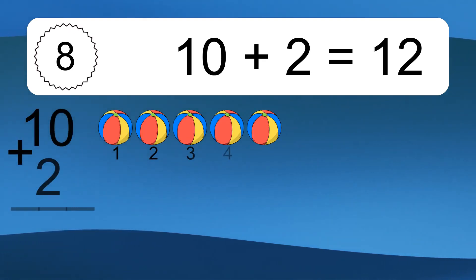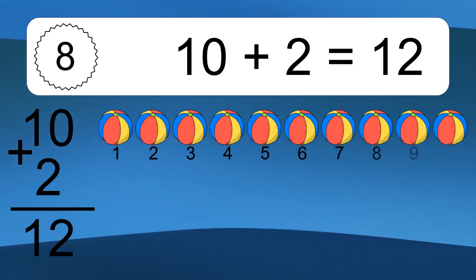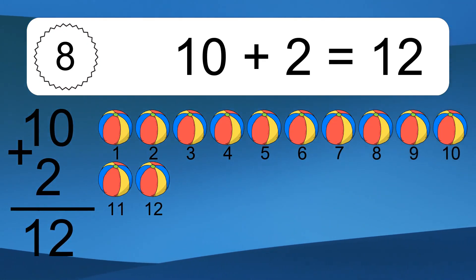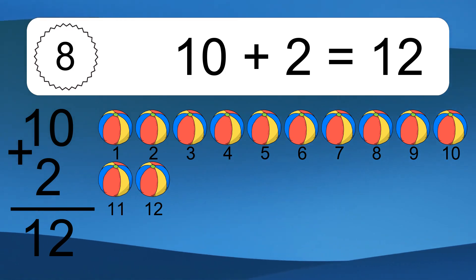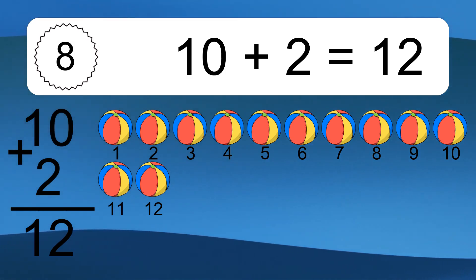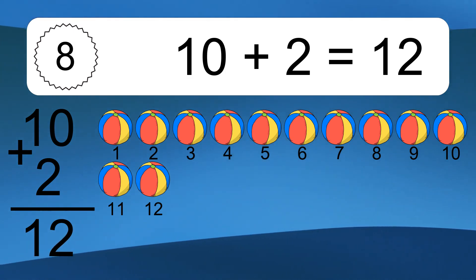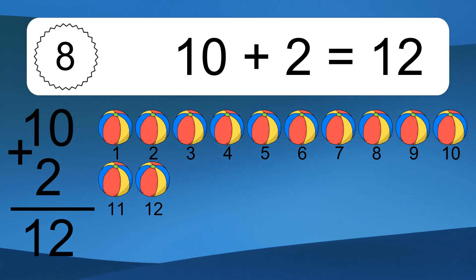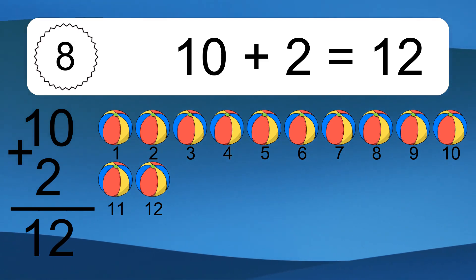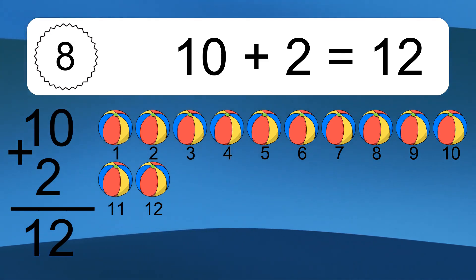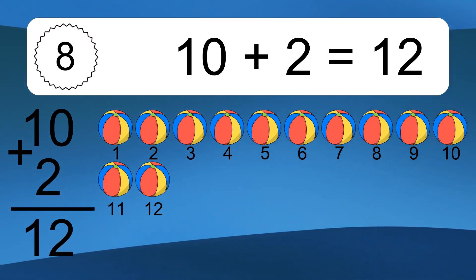10 plus 2 equals what? 10 plus 2 equals 12. Let's count it. 1, 2, 3, 4, 5, 6, 7, 8, 9, 10, 11, 12.